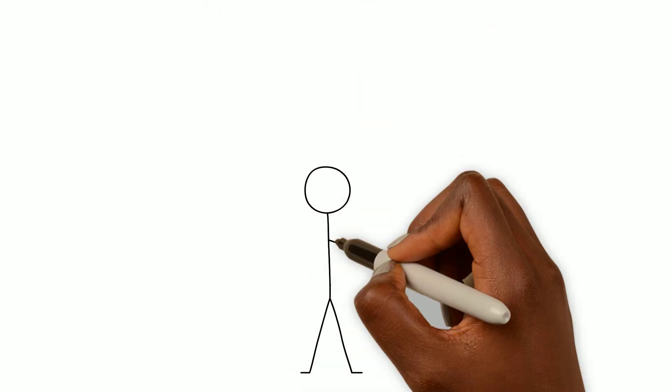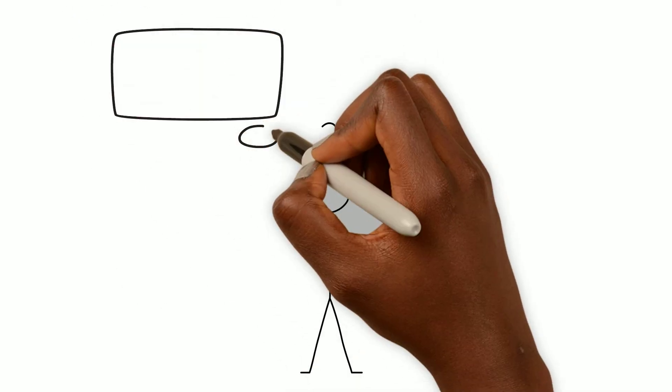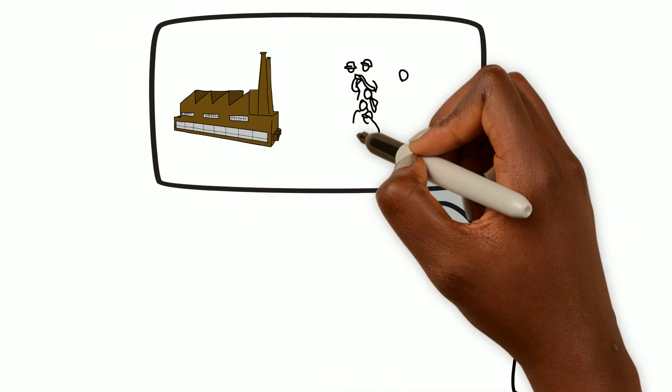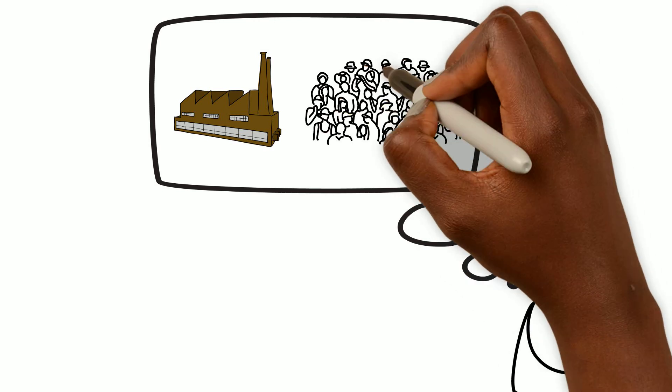When evaluating a leader's style approach, ask yourself these two questions: What is the leader's concern for productivity? And what level of concern does the leader have for people?